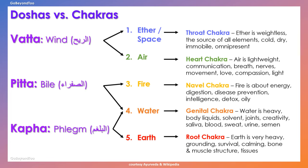The fire element, which is the predominant element for pitta, promotes the health of the navel chakra. Fire is about energy, digestion, disease prevention, intelligence, detox, and it's oily. The water element, which supports both the pitta and kapha doshas, promotes the health of the genital chakra. Water is heavy — it's about body liquids, joints, creativity, saliva, blood, sweat, urine, and semen.